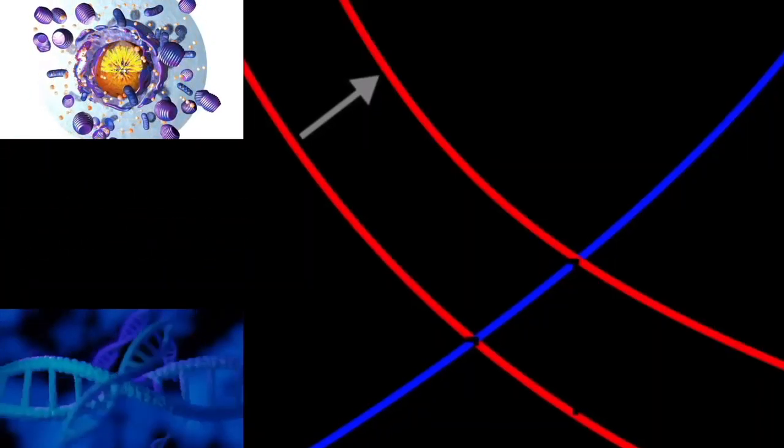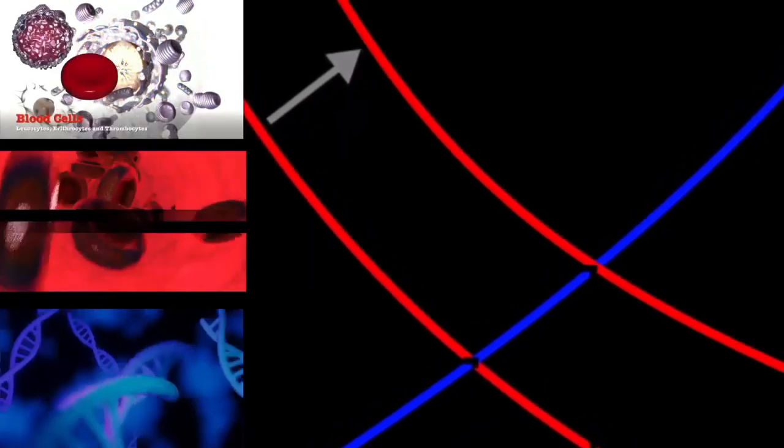Early prometaphase: the nuclear membrane has just disassembled, allowing the microtubules to quickly interact with the kinetochores, which assemble on the centromeres of the condensing chromosomes.